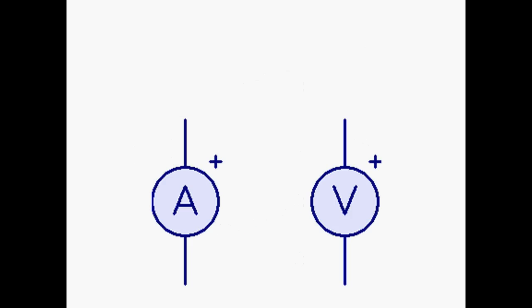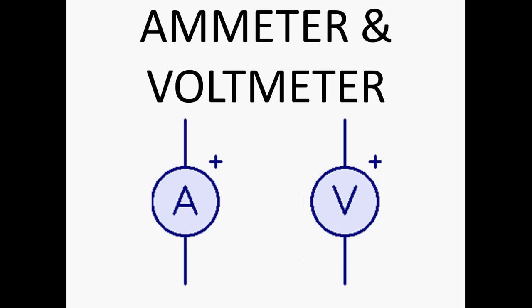These two are ammeter and voltmeter. Ammeter measures current and you always connect them in series, as in inline with whatever it is you're trying to measure the current flowing through. Voltmeter measures the voltage and you connect that in parallel, as in sort of piggybacked around whatever it is you're trying to measure voltage across.